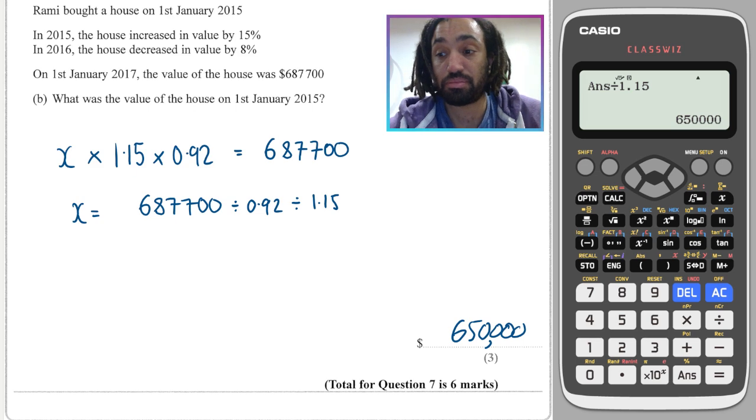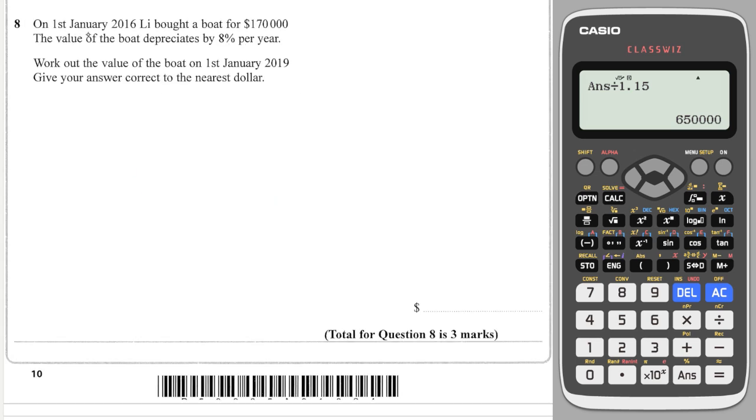Next question: Lee bought a boat for $170,000. The boat depreciates, which means goes down by 8% per year. To find the multiplier, you can do 100 minus 8, then divide by 100. This gives us the multiplier of 0.92. Work out the value of the boat in 2019, so three years on.